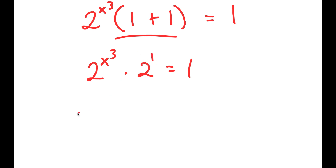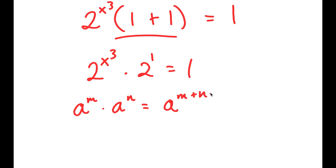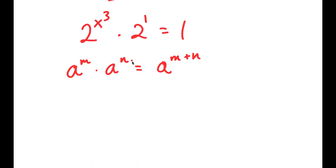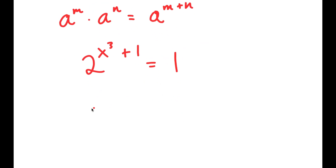Now, 2 is the same thing as 2 to the power of 1. Using the property that a to the power of m times a to the power of n equals a to the power of m plus n, I get 2 to the power of x cubed plus 1. Then I rewrite 1 as 2 to the power of 0, so I get 2 to the power of x cubed plus 1 is equal to 2 to the power of 0.